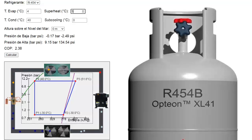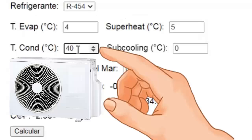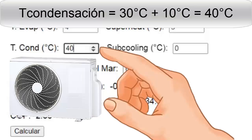Now let's focus on the condensation temperature within the air conditioning system. To calculate it, we add 10 degrees Celsius to the outdoor ambient temperature. For example, if the outdoor temperature is 30 degrees Celsius, the condensation temperature will be 40 degrees Celsius.